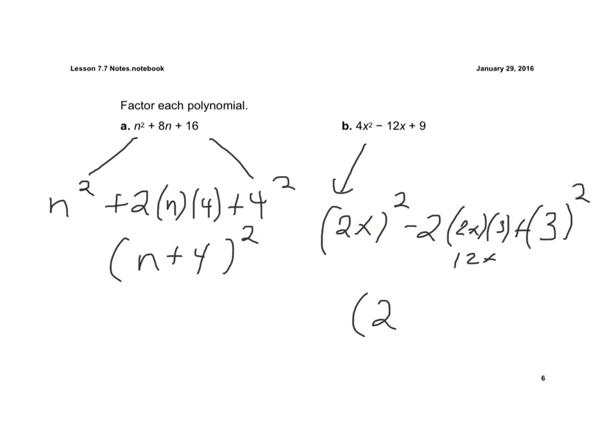So now it's 2x, and because this term was negative, minus 3 all to the second power. So a little bit more to perfect square trinomials than difference of 2 squared.